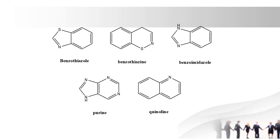Thiazole contains both nitrogen and sulfur. Next one is benzothiazine. It contains benzene as well as a thiazine ring. The drug piroxicam contains the benzothiazine ring.